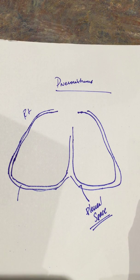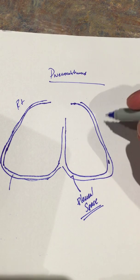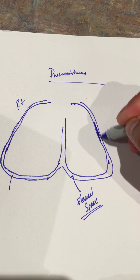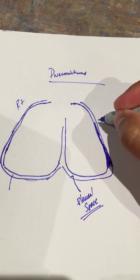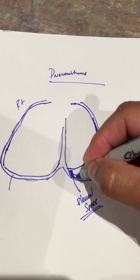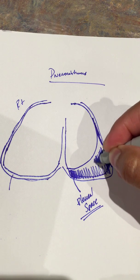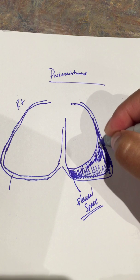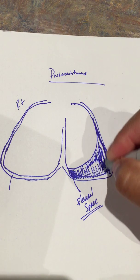In a pneumothorax, you have air in the pleural space — air accumulation here. That air accumulation is going to cause pressure on the lung, and that increase in pressure is going to cause the lung to collapse. So that's essentially what a pneumothorax is — air in the pleural space which leads to collapse of the lung. That is just our very basic definition.